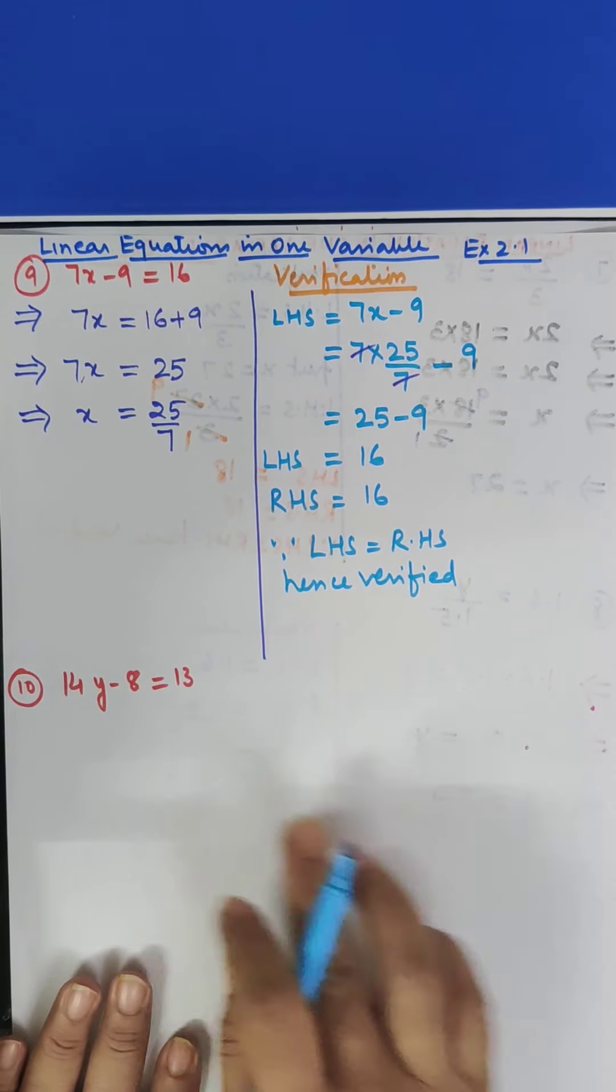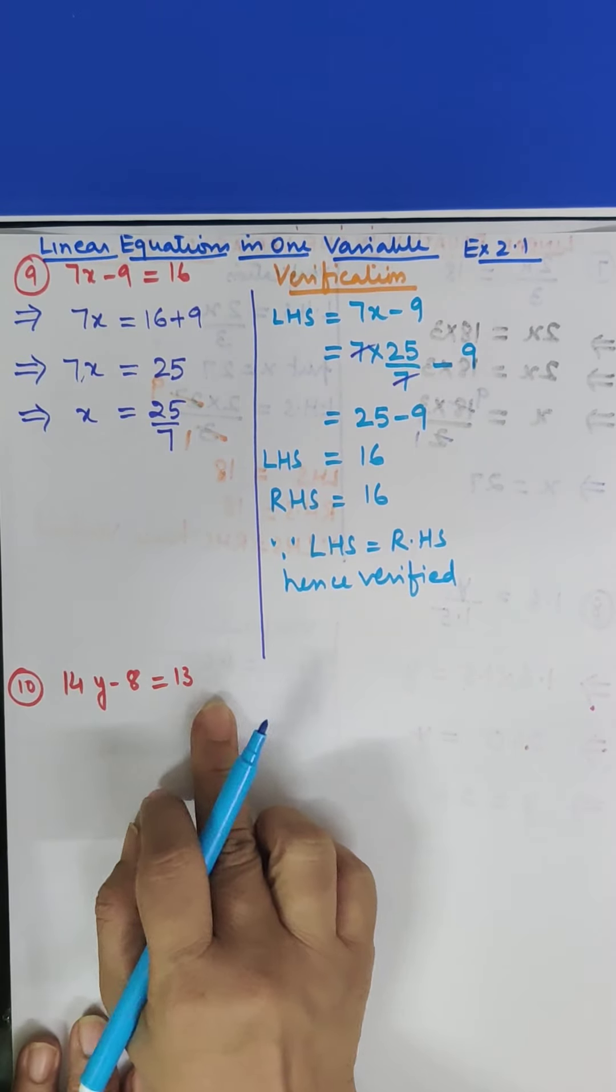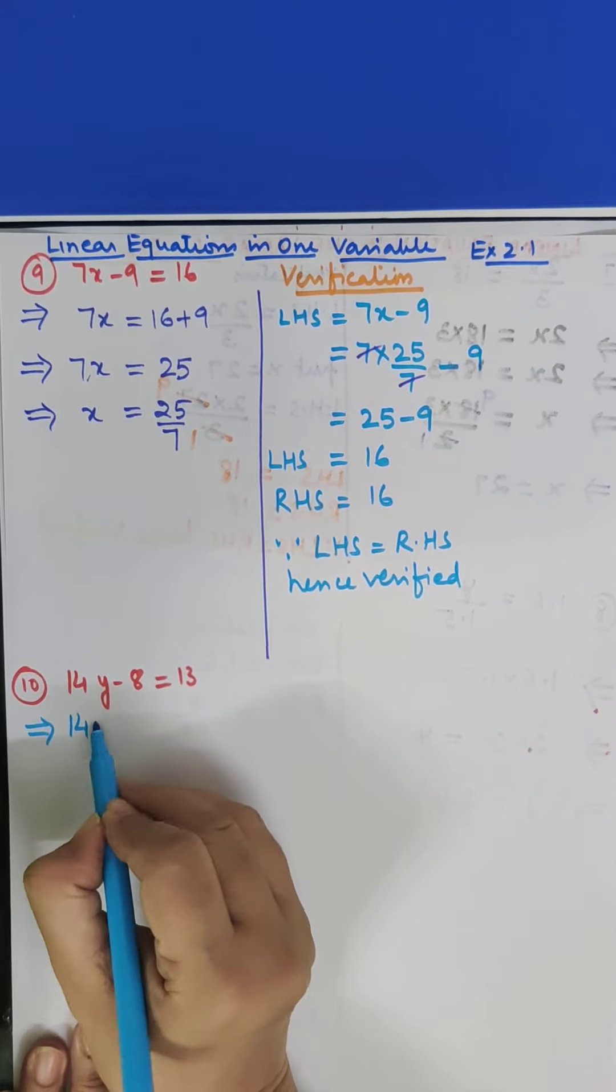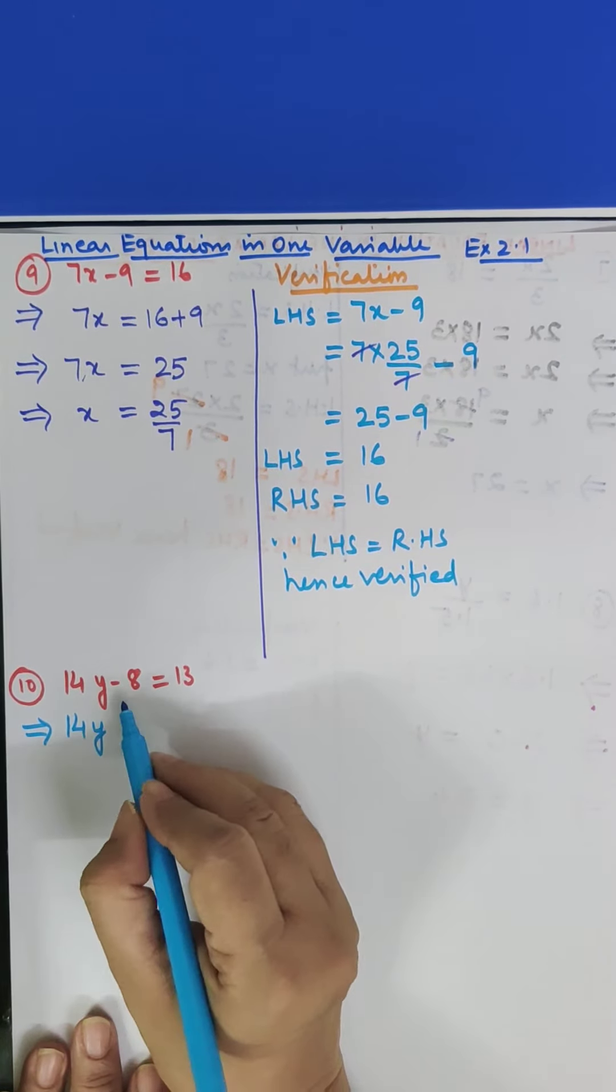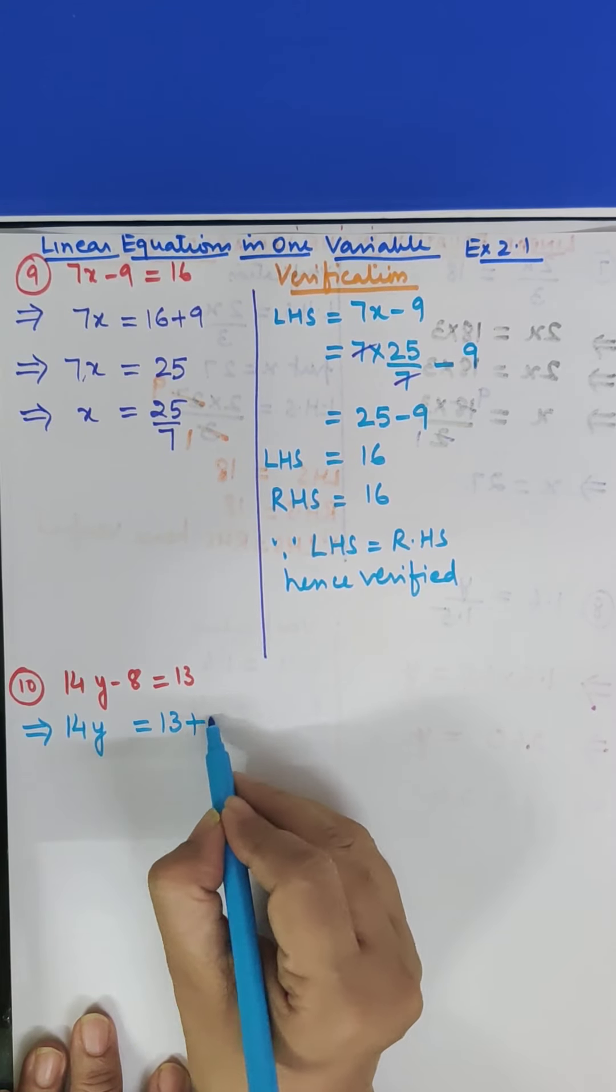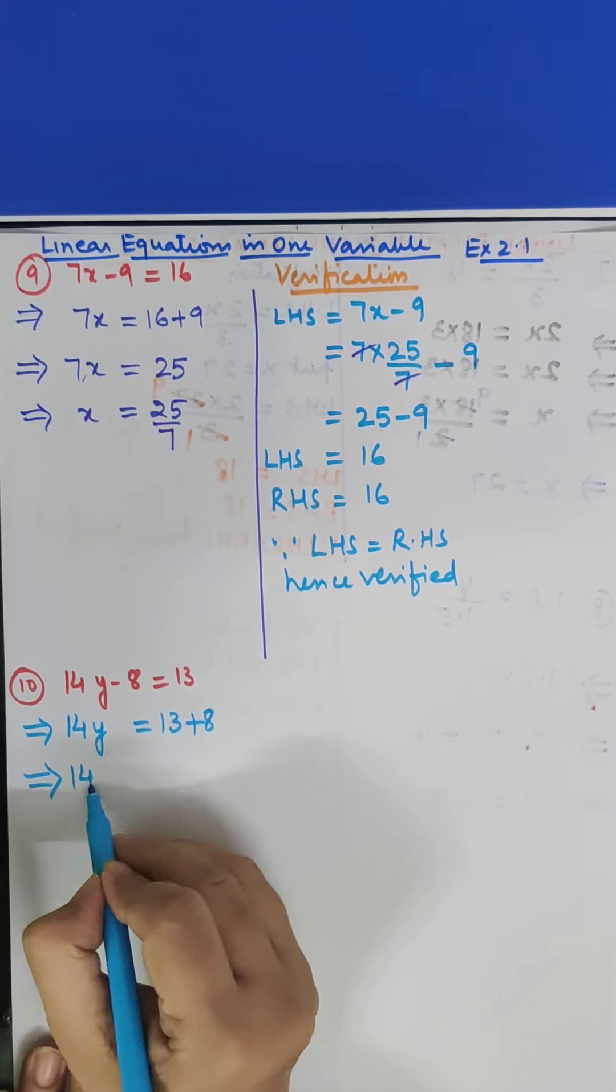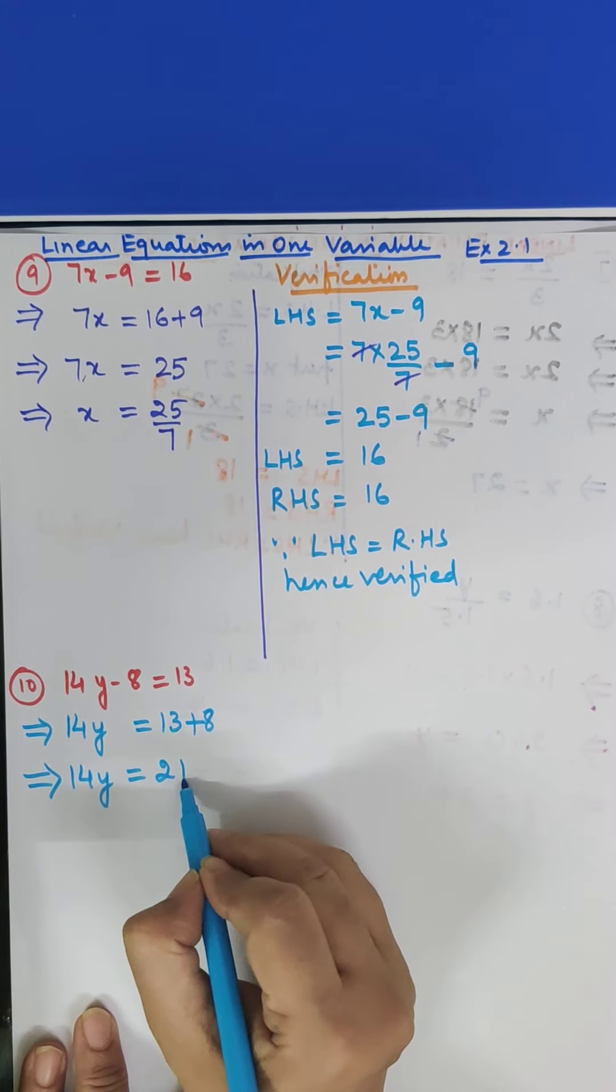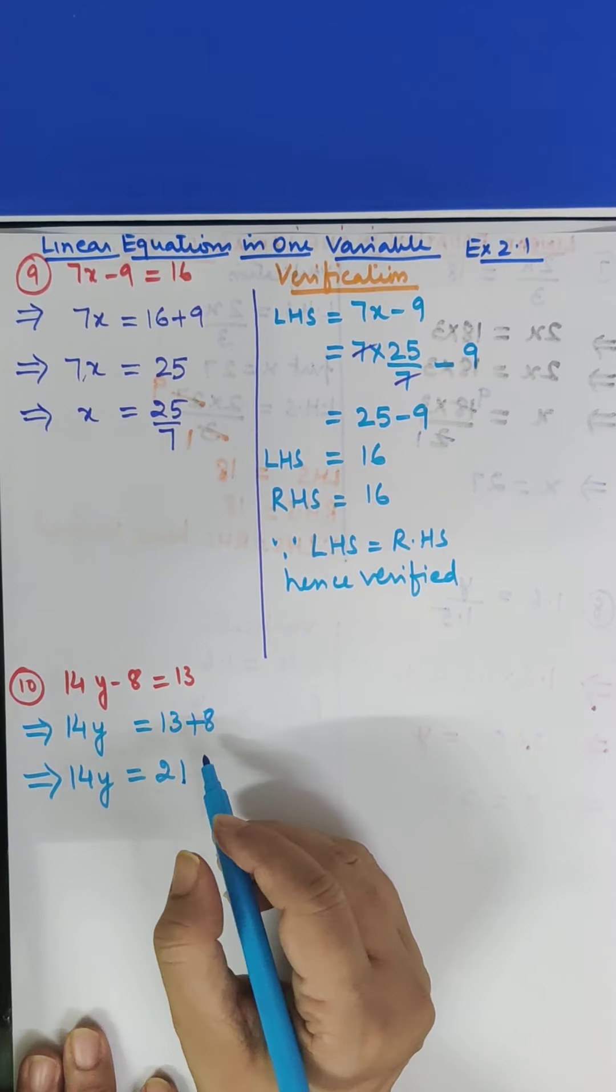Right, now we come to the next question. This is 14Y minus 8 is equal to 13. In this also Y term is on this side where it should be and the other one we will shift to the other side. So this becomes 13 plus 8. This implies that 14Y is equal to 13 plus 8 which is 21. OK?